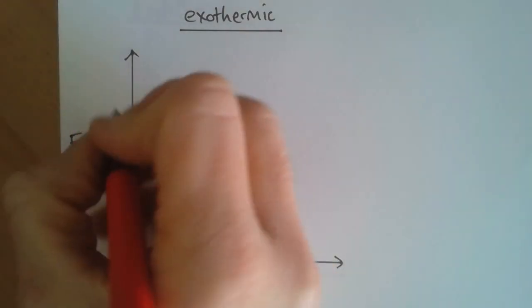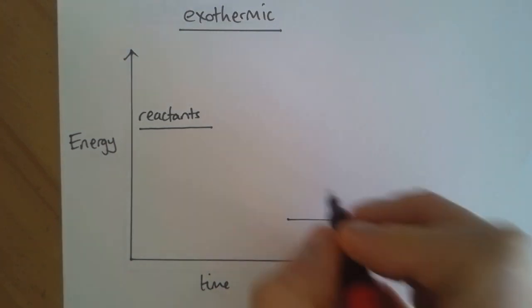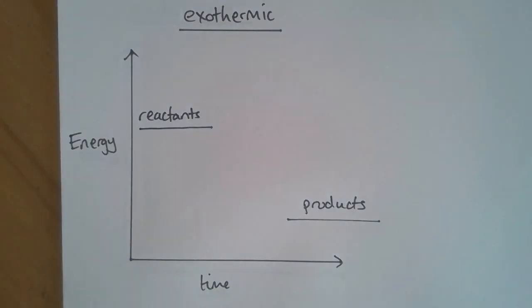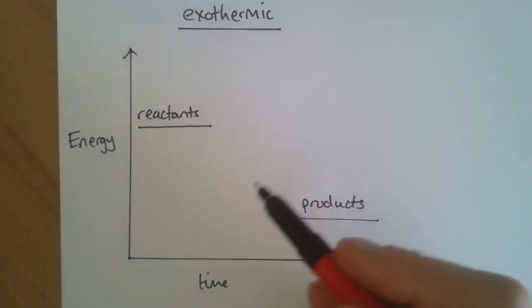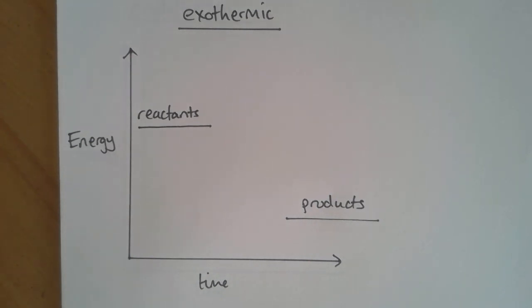This line represents the energy of the reactants. This line represents the energy of the products. The energy of the products is lower than the energy of the reactants because this is an exothermic reaction and energy is released into the surroundings.